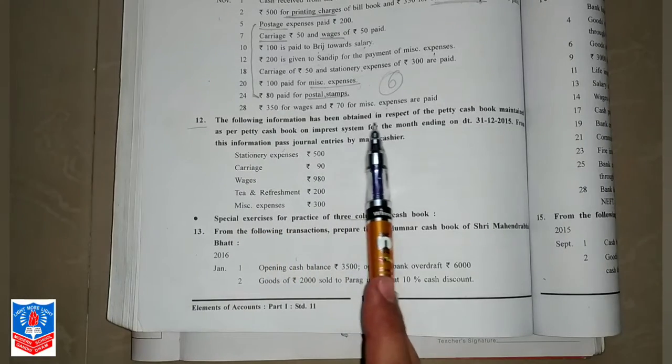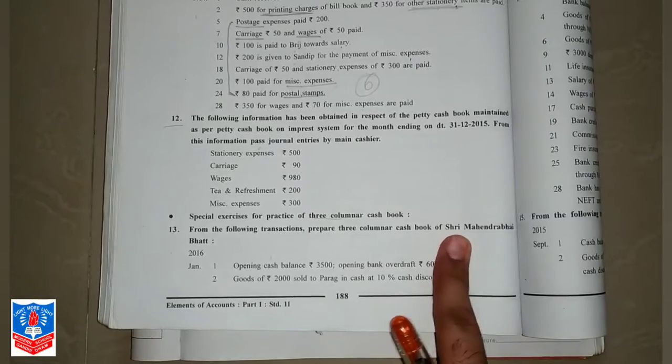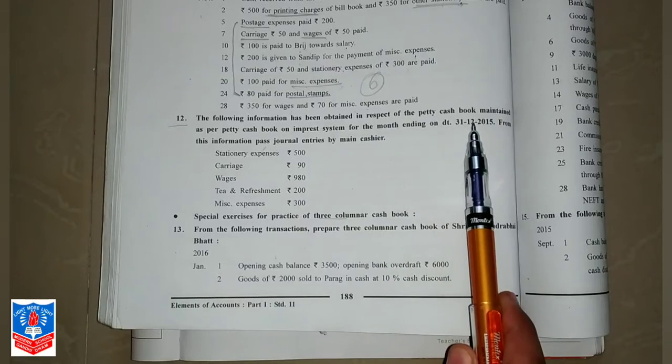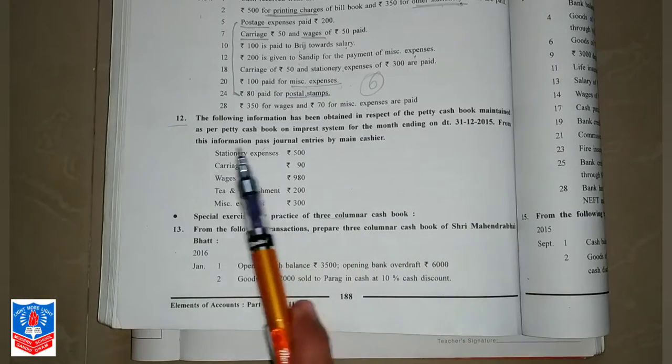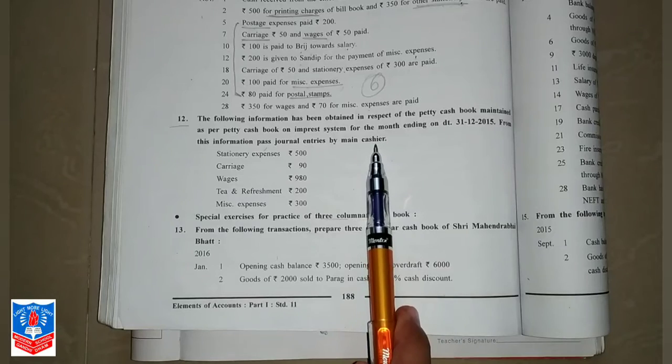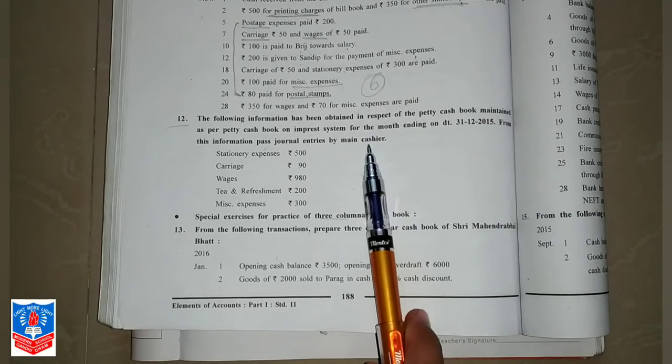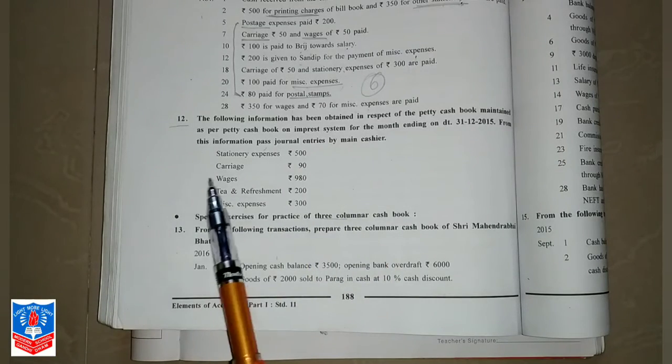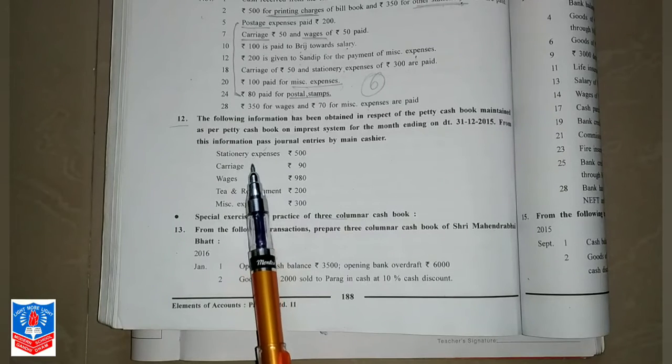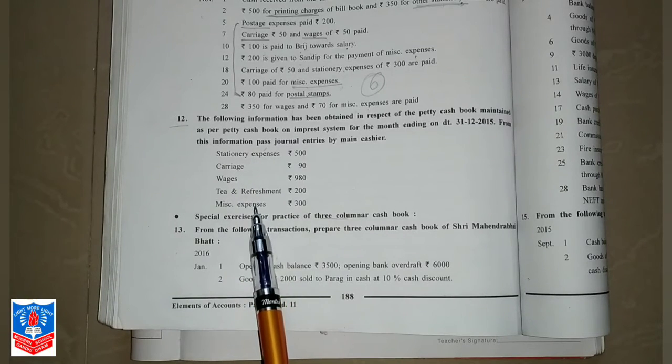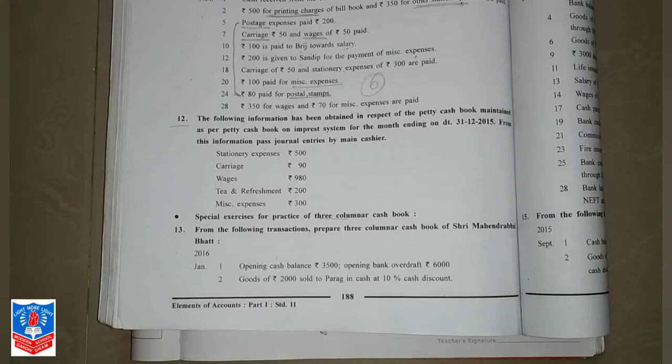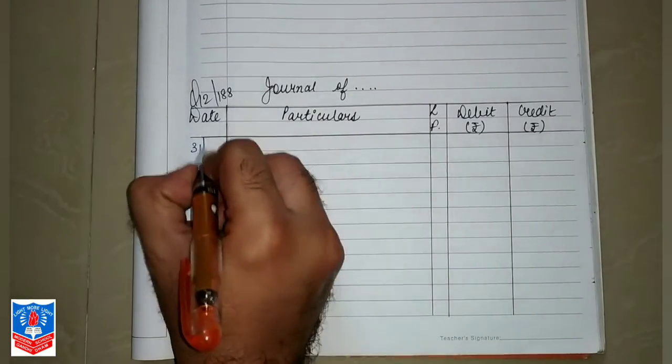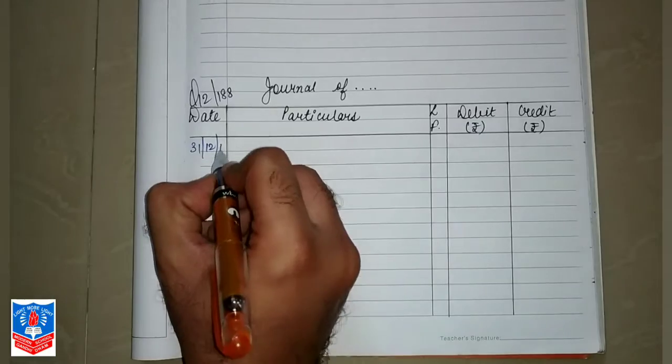Coming on to question number 12 on page number 188. The following information has been obtained in respect of petty cash book maintained as per impressed system for the month ending on 31-12-2015. From this information pass journal entry by main cashier. You are supposed to assume yourself as the chief cashier or the main cashier and write the journal entries. The expenses are stationery, carriage, wages, tea and refreshment, and last one is miscellaneous expense.